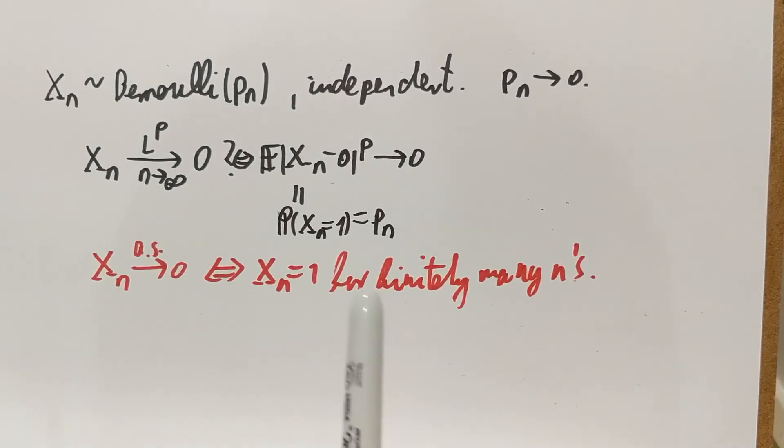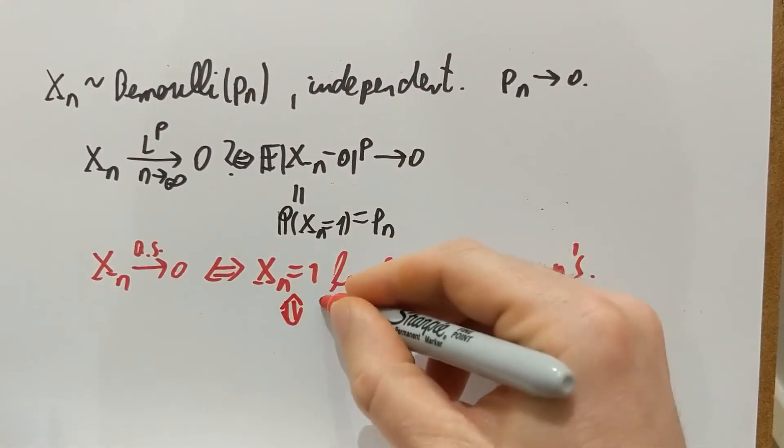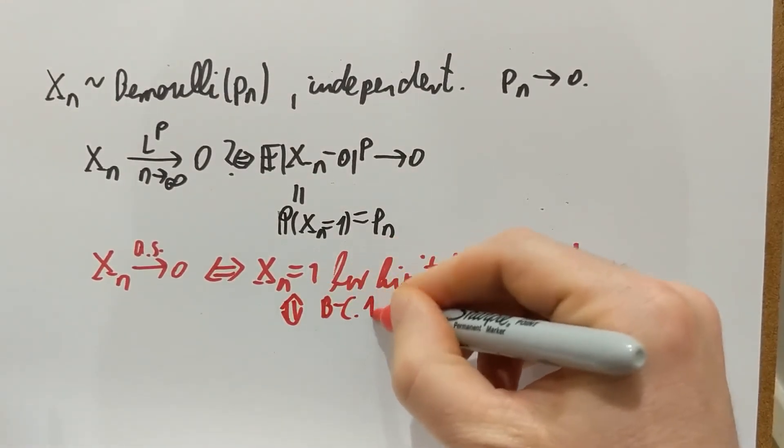Now notice that we have independence, which means we can apply both Borel-Cantelli lemmas. If you apply both Borel-Cantelli lemmas, then infinitely often Xn equals one is equivalent to the non-summability of the Pn, and finitely many cases of Xn equals one is equivalent to the summability of the Pn. So because of independence, we can apply Borel-Cantelli lemmas.